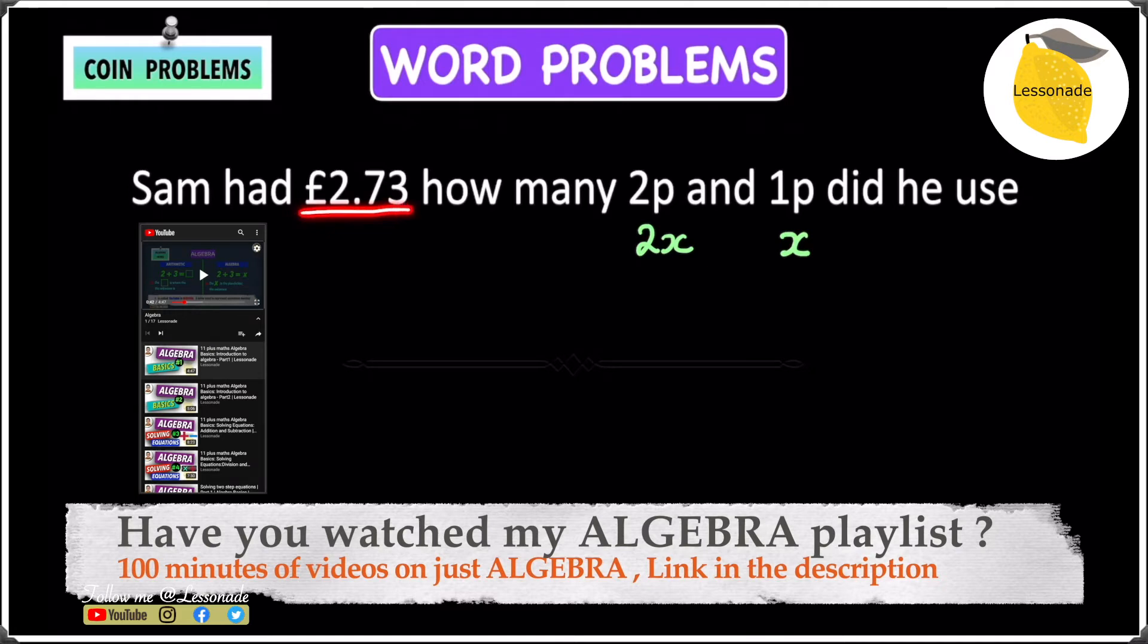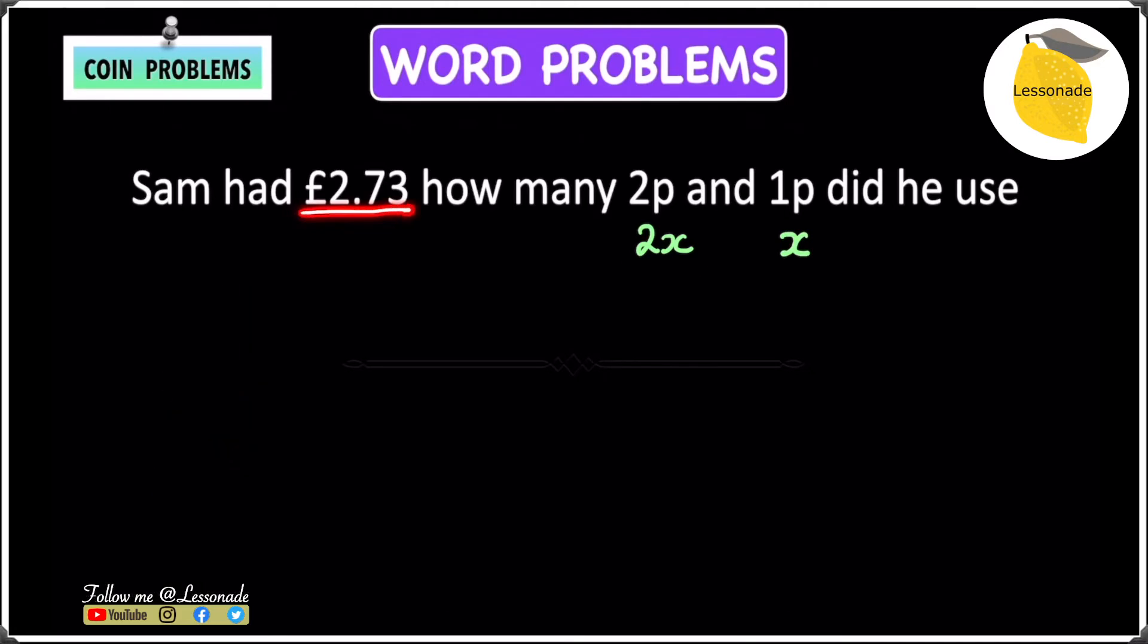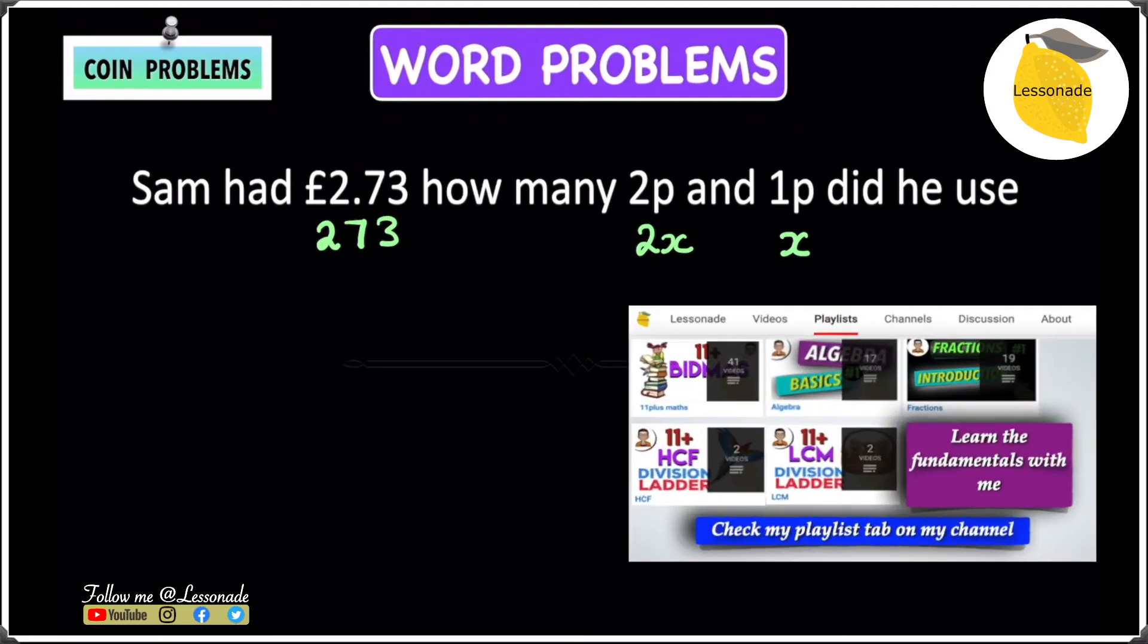So £2.73, we're going to change this into pence. £2.73 is the same as 273 pence. So now, after doing all of this, we can form the equation and find the answer.